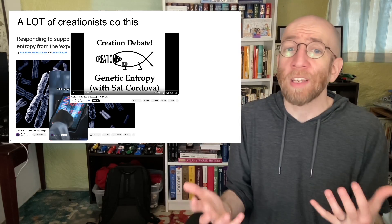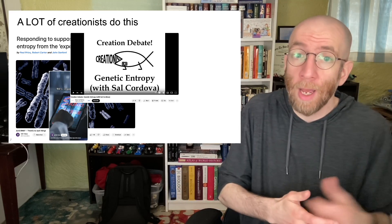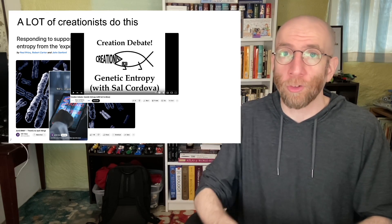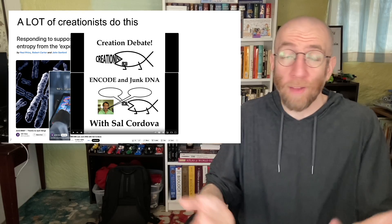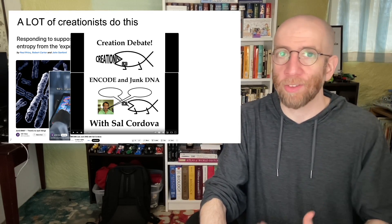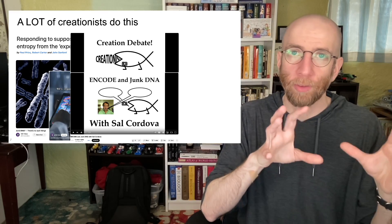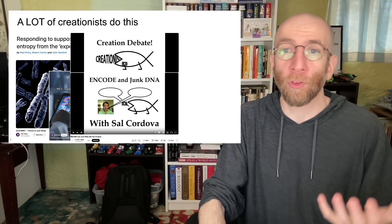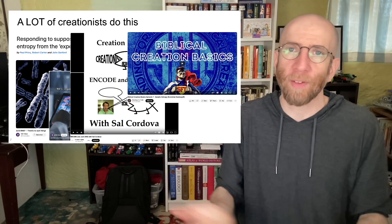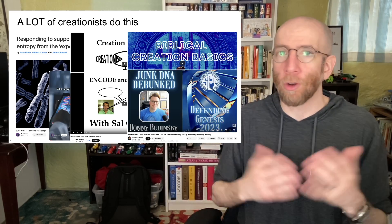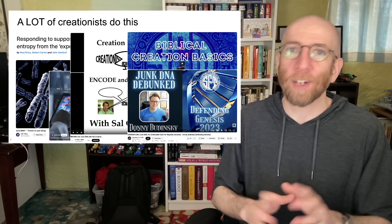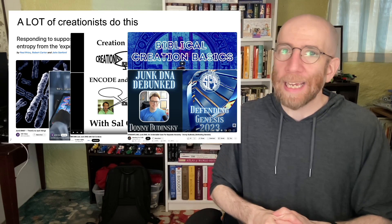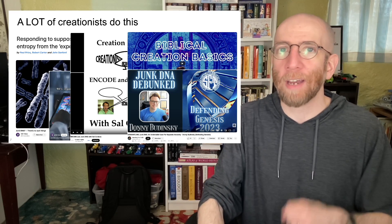Another example is Sal Cordova. He is a friend of Dr. John Sanford's, he's worked with Sanford, and he is a vocal defender of genetic entropy. He is also a vocal opponent of the concept of junk DNA in the human genome — he takes both positions at the same time. And when professionals make these arguments together, that filters down to amateurs. For example, Standing for Truth on YouTube makes video after video about genetic entropy while also claiming that junk DNA has been debunked. While Dr. John Sanford is a great example of making this contradictory set of arguments side by side in his book, he's not the only one. This is a very common pitfall that creationists fall into.